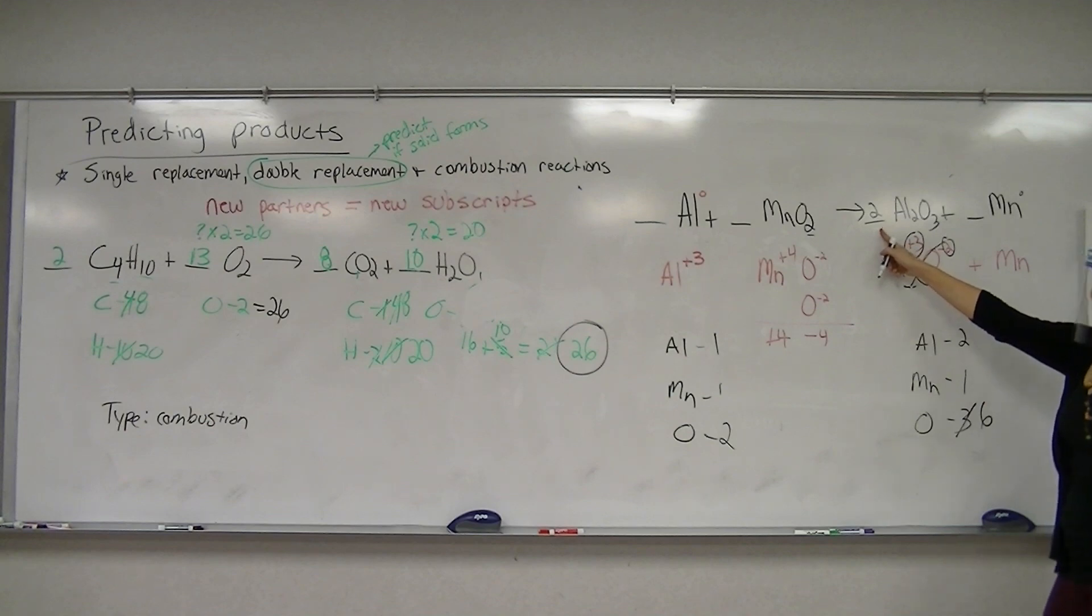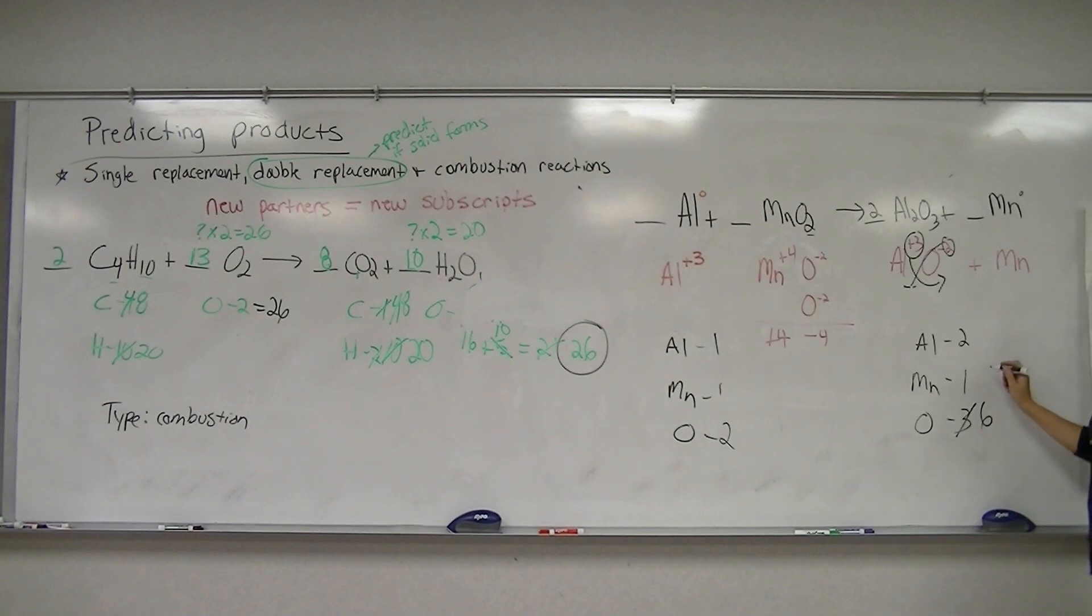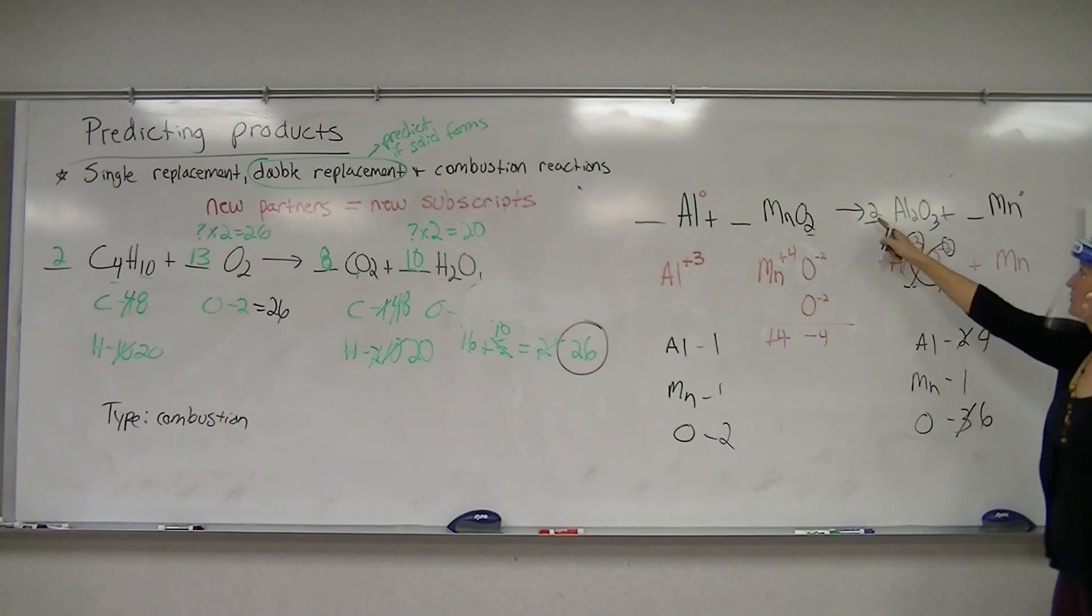But when I put the two there, it doesn't just affect the oxygen, it affects my aluminum. So how many aluminums do I have? Four, right? Coefficient times subscript, two times two, four.